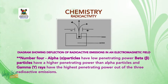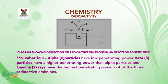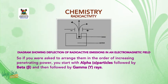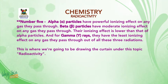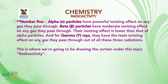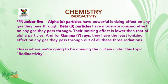So if asked to arrange them in order of increasing penetrating power: alpha, then beta, then gamma. Number five: alpha particles have powerful ionizing effect on any gas they pass through. Beta particles have moderate ionizing effect — lower than that of alpha particles. Gamma rays have the least ionizing effect on any gas they pass through out of all three radiations.